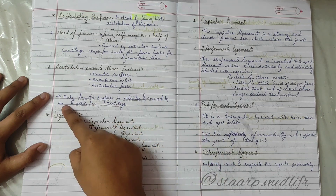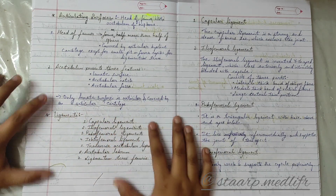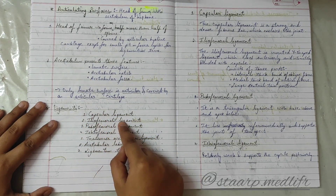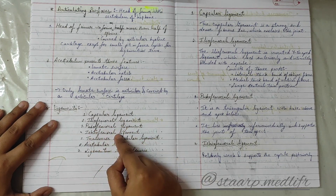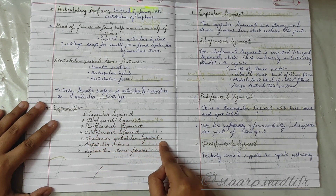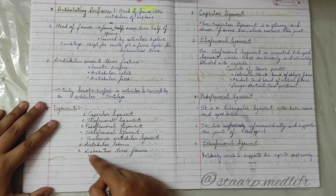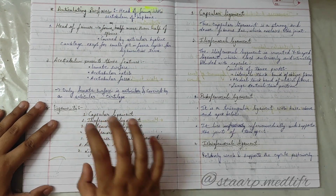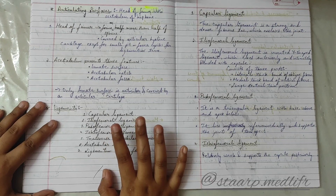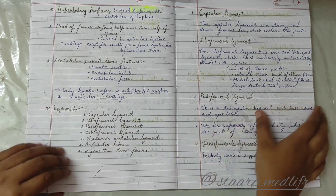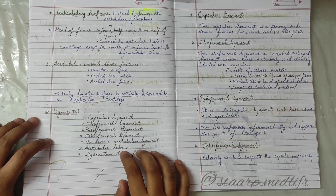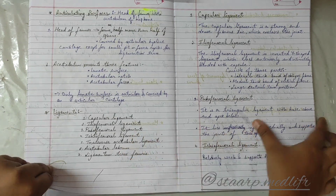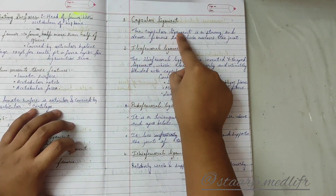The ligaments of the hip joint are: the capsular ligament, iliofemoral ligament, pubofemoral ligament, ischiofemoral ligament, transverse acetabular ligament, acetabular labrum, and ligamentum teres femoris — seven ligaments in total. This is a very important question that comes in university exams.